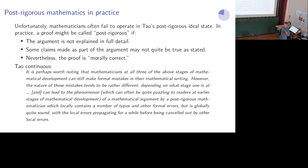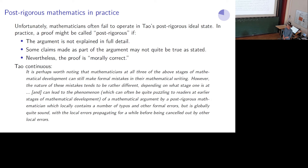I want to use the term post-rigorous here a little bit more broadly, not quite in the ideal sense that Tao frames it. We might call an argument post-rigorous if it's not explained in full detail, if some claims made as part of the argument might not quite be true as stated, and nevertheless the proof is morally correct. This is something I feel like I encounter a lot in the literature in my field — maybe post-rigorous adjacent.